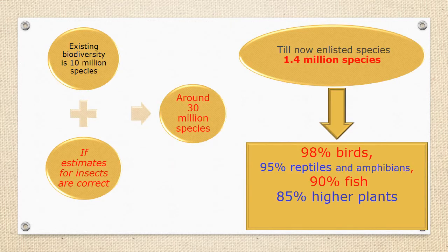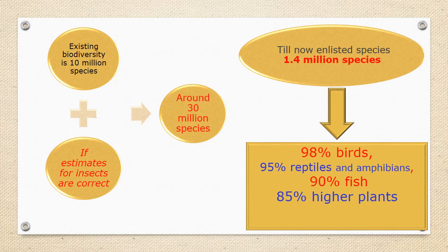Conservative estimates of the existing biodiversity is 10 million species. If estimates for insects are correct, then it could be around 30 million species. We have till now analyzed about 1.4 million species. It includes among others about 98 percent birds, 95 percent reptiles and amphibians, 90 percent fish, and 85 percent higher plants.